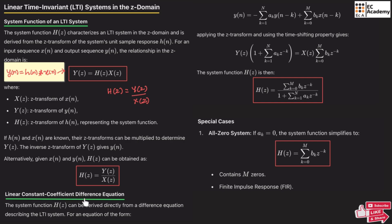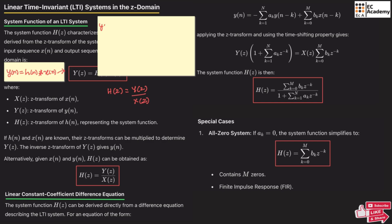Now let us understand the linear constant coefficient difference equation. The system function H(z) can be directly obtained by using the difference equation given here. This equation was understood in our previous lecture. If we rearrange this equation, we can write: y(n) + summation from k=1 to N of a_k·y(n−k) = summation from k=0 to M of b_k·x(n−k). Now if we apply the Z transform to y(n), and apply the time shift property to y(n−k), we can write it as z^(−k)·Y(z).